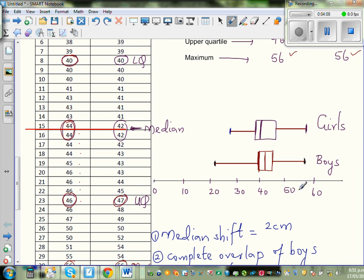Then I've drawn the box and whisker for boys and girls. So this is only a sketch. This is minimum, lower quartile, median, upper quartile and maximum.